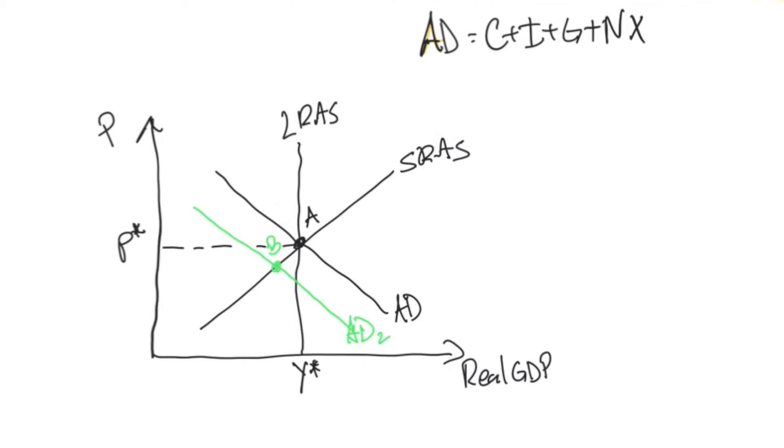So at any point, if our intersection of aggregate demand and short run aggregate supply curve are not on our long run aggregate supply curve, then we know this is a short run outcome. So what's the state of affairs at point B?